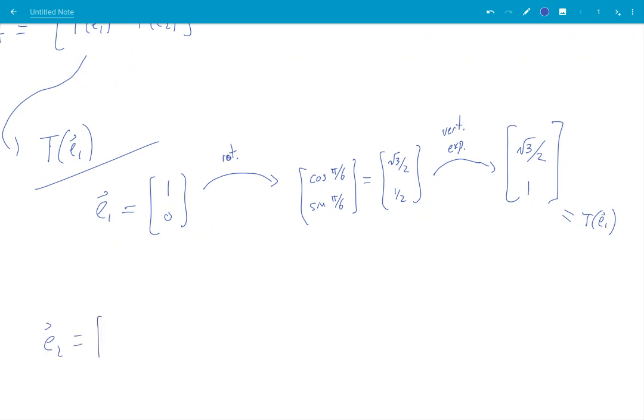And E₂ is 0, 1. So, when I rotate, I get minus sine 5 over 6, cos 5 over 6. So, how do I know that? Well, I look at my rotation matrix that I found above and I look at the second column.